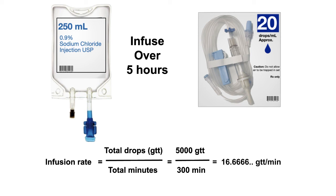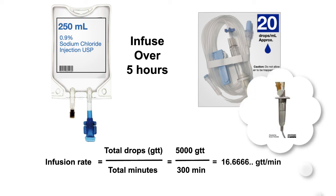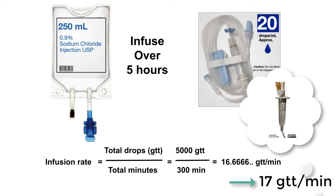Now, as the nurse, I would have to adjust the roller clamp on the tubing and then count the drops that are falling in the chamber. I would need to make sure there are about 16.6 repeating drops falling each minute. However, I'm not able to count a fraction of a drop with my eyes. So that is why it's appropriate that we round these drops per minute rates to the nearest whole number. In this case, 16.6 repeating rounds to 17 drops per minute.